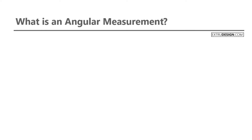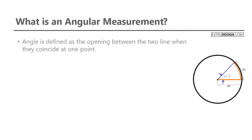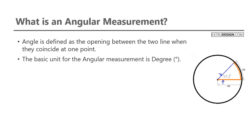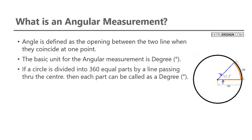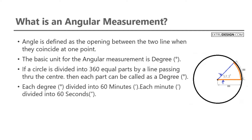Let us see what is an angular measurement. Angle is defined as the opening between two lines when they coincide at one point. The basic unit for angular measurement is degree. If a circle is divided into 360 equal parts by a line passing through the center, then each part is called a degree. Each degree is divided into 60 minutes, and each minute is divided into 60 seconds.